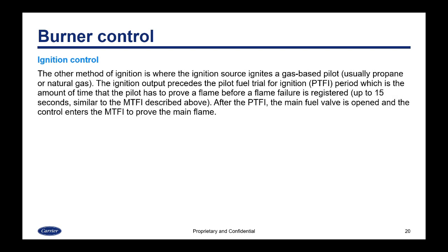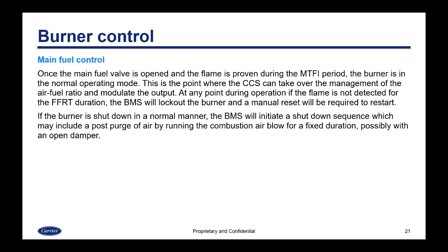The other method of ignition is where the ignition source ignites a gas-based pilot, which is usually propane or natural gas. The ignition output precedes the pilot fuel trial for ignition period — the amount of time the pilot has to prove a flame before a flame failure is registered — which is again up to 15 seconds, similar to the MTFI. After the PTFI, the main fuel valve is opened and the control enters the main trial for ignition to prove the main flame. Once the main fuel valve is opened and the flame is proven during the MTFI period, the burner is in normal operating mode, where the CCS can take over air-fuel ratio control and modulate the output.